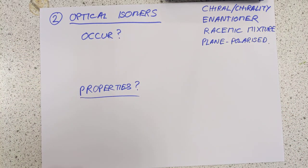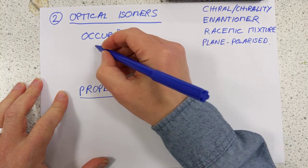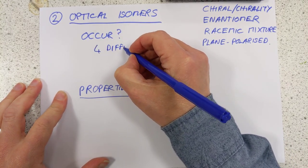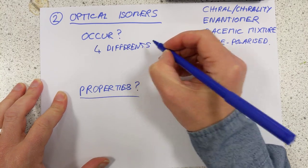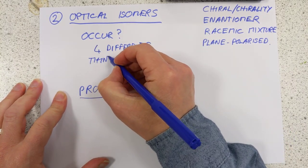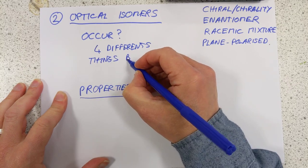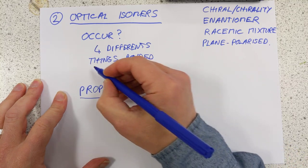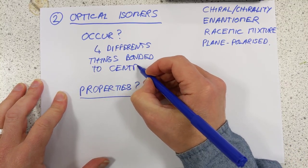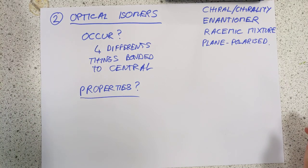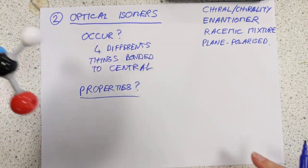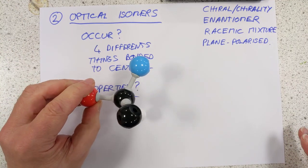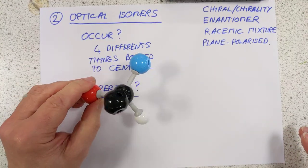When do optical isomers occur? They occur when a central atom has got four different groups or atoms bonded to it. It can only happen with something that has four different bonds to it. It can't happen with a planar molecule — it's got to be three-dimensional. It's a fallout of three-dimensionality, which is quite cool actually.